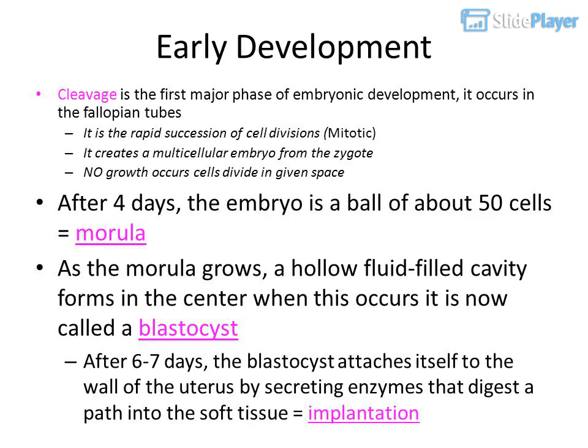Cleavage is the first major phase of embryonic development. It occurs in the fallopian tubes and is the rapid succession of cell divisions by mitosis. It creates a multi-cellular embryo from the zygote, and no growth occurs — cells divide within the given space. After four days, the embryo is a ball of about 50 cells, called a morula. As the morula grows, a hollow fluid-filled cavity forms in the center.